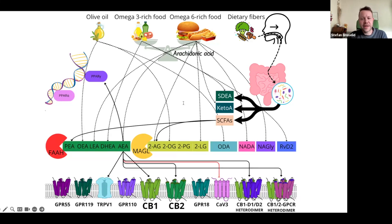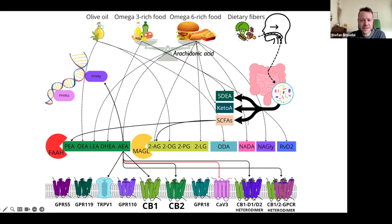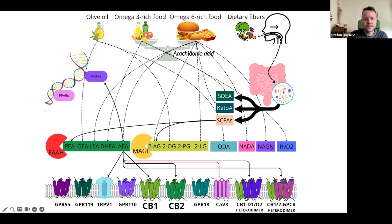Now let's look into the pharmacology of anandamide, shown as AEA in the diagram. Its primary dietary sources are vegetable oils with high omega-6 content. All omega-6 fatty acids can be converted into arachidonic acid by our bodies. Anandamide is broken down by the enzyme fatty acid amide hydrolase (FAAH). It interacts with a number of receptors in addition to CB1 and CB2, influencing a wide repertoire of physiological processes. Anandamide also activates the nuclear receptor PPAR-gamma, a transcription factor that plays an important role in inflammation, immunity, and lipid metabolism.